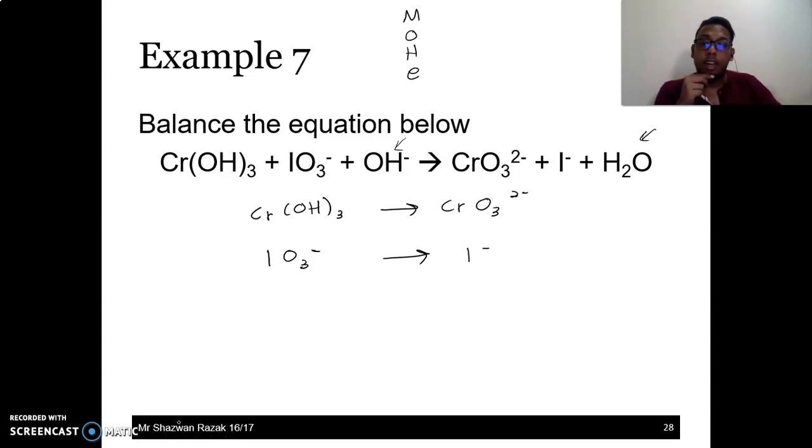The first one. We will balance the metal. Look. Cr, Cr. Good. O₃, O₃. Good. So we only don't have hydrogen. Here there are 3 hydrogens. Here there is no hydrogen. So we need to add H⁺. How many? We need to add 3. So the charge is empty, 3 minus 2 is positive 1. So positive 1, add electron. Settled there.